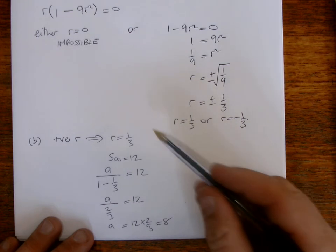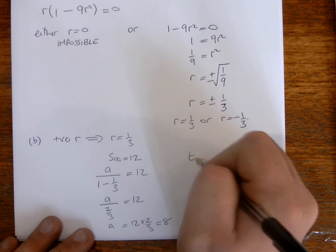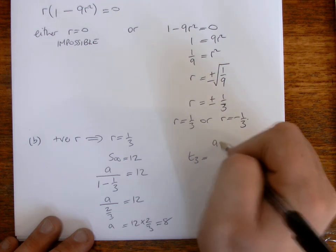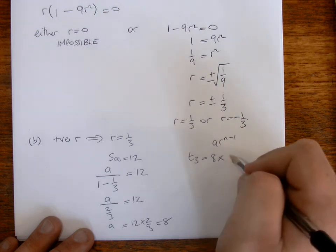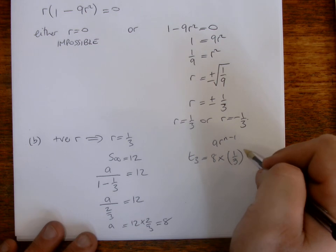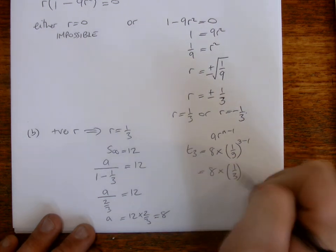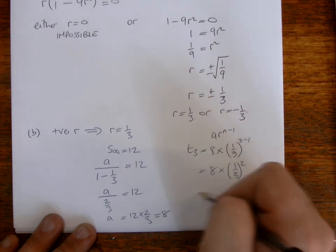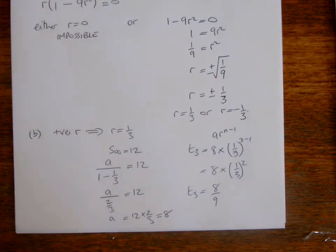So we know now that R is one third, A is 8. So to get the third term in the series, T3, remember we're using the formula AR to the N minus 1. So A will be 8 times R, which is one third, N minus 1, well, that'll be 3 minus 1, which will be squared. And when you square one third, you get one ninth. So this will work out to be eight ninths. So that will be the third term in the GP there.